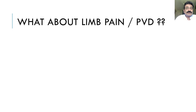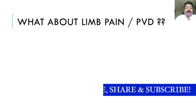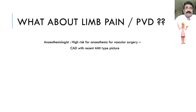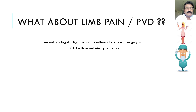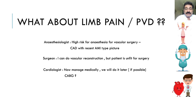The major question remained: what to do about the limb pain and peripheral vascular disease? The anesthesiologist said the patient was high risk because he had just experienced a situation like acute coronary syndrome and an AMI-type picture. The surgeon said revascularization could be done but the patient was currently unfit for surgery. The cardiologist noted it was a narrow escape and suggested considering CABG.